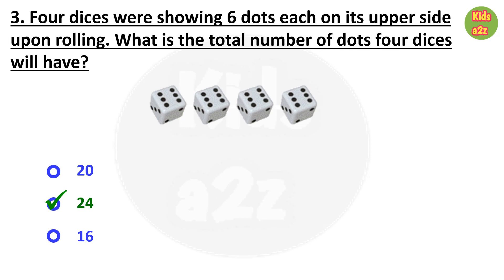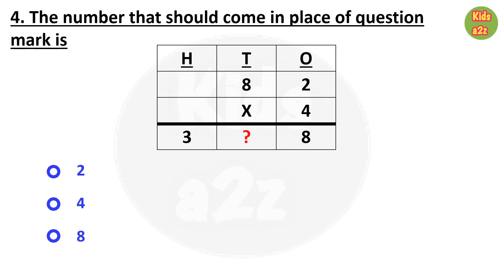Question 4: The number that should come in place of the question mark. We need to find this number. We can see this is a multiplication: 4 multiplied by 2 equals 8, so we place 8 under the ones column. And 4 multiplied by 8 equals 32, so under the tens column we write 2. The correct answer is 2, that means the first option.